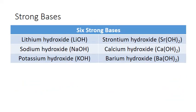Let's examine strong bases first. This table lists several common strong bases. These are all soluble ionic compounds that contain hydroxide ion, and these are the six that I expect you to know. When each of these compounds dissolves, they release the hydroxide ion in their formula into solution. The amount released is equal to the concentration of the ionic base dissolved times the number of hydroxide ions in the formula for the base.